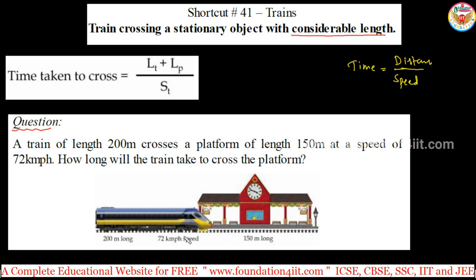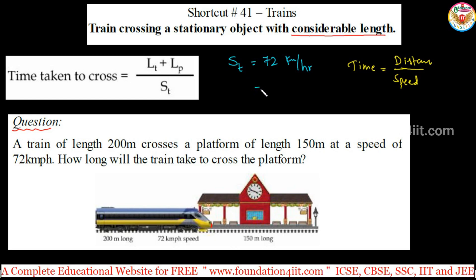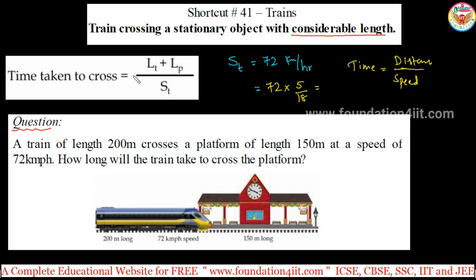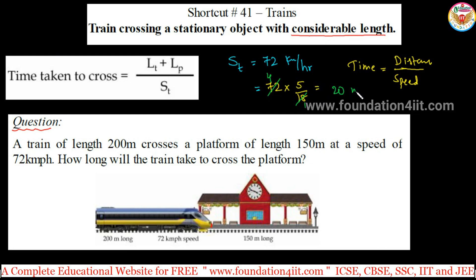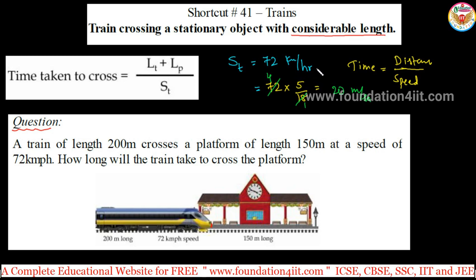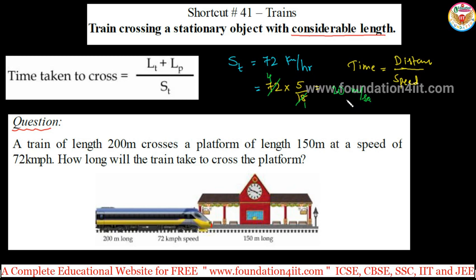The length of the train is in meters, the length of the platform is also in meters, but speed is in kilometers per hour. To convert from kilometers per hour to meters per second, multiply by 5/18. So 72 km/h multiplied by 5/18 gives 20 meters per second directly — no need to separately convert kilometers to meters and hours to seconds.